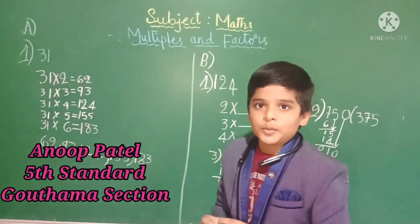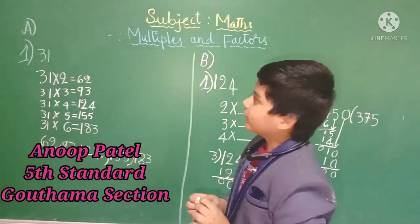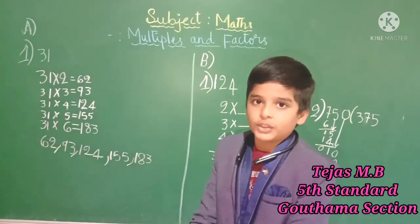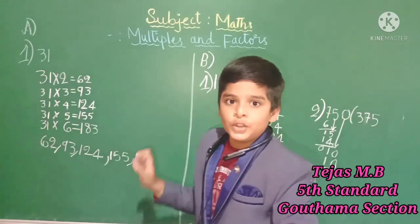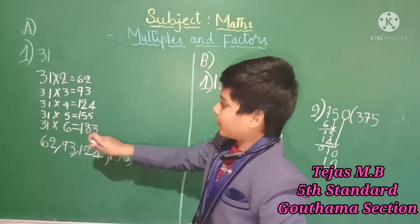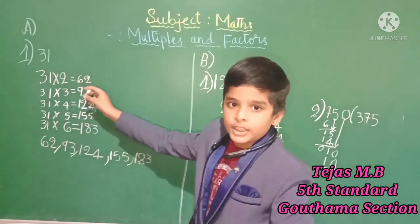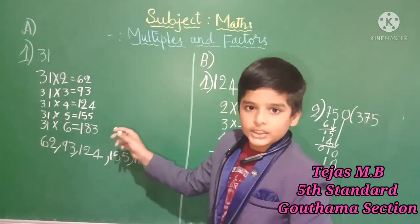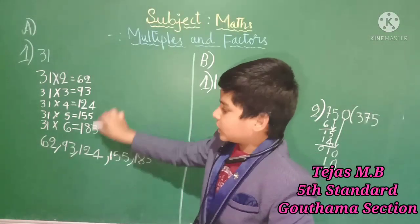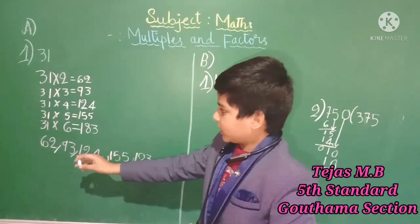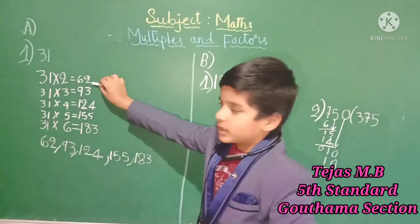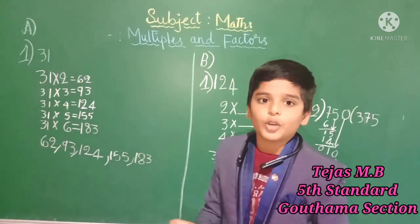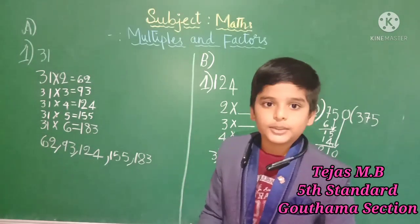Now my friend is solving the problems on multiples and factors. Write 4 multiples for each of the following. The first problem is 31. You just want to write the tables of 31 up to 5 or 6. 31 times 2 is 62, 31 times 3 is 93, 31 times 4 is 124, 31 times 5 is 121, and 31 times 6 is 193. You just want to write the products of 31. The multiples of 31 are 62, 93, 124, 165, and 193. You want to solve in your rough notebook. Let us move to the next main.